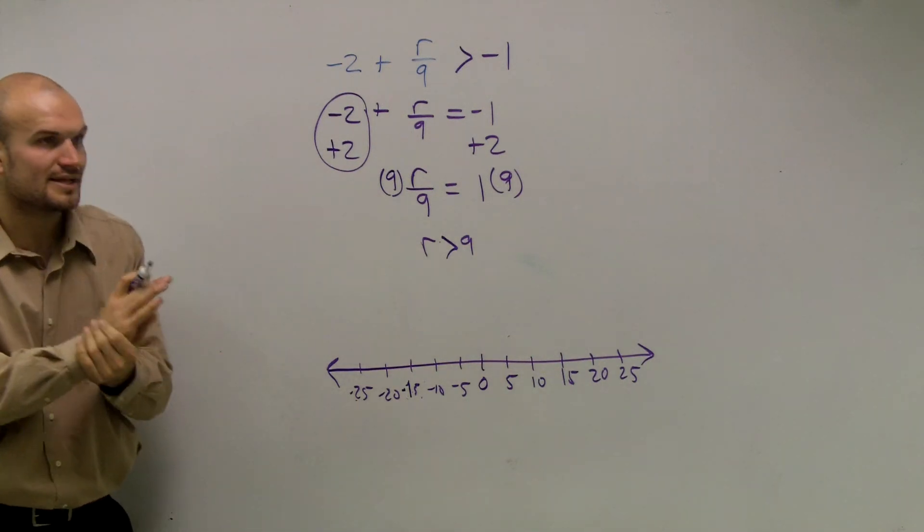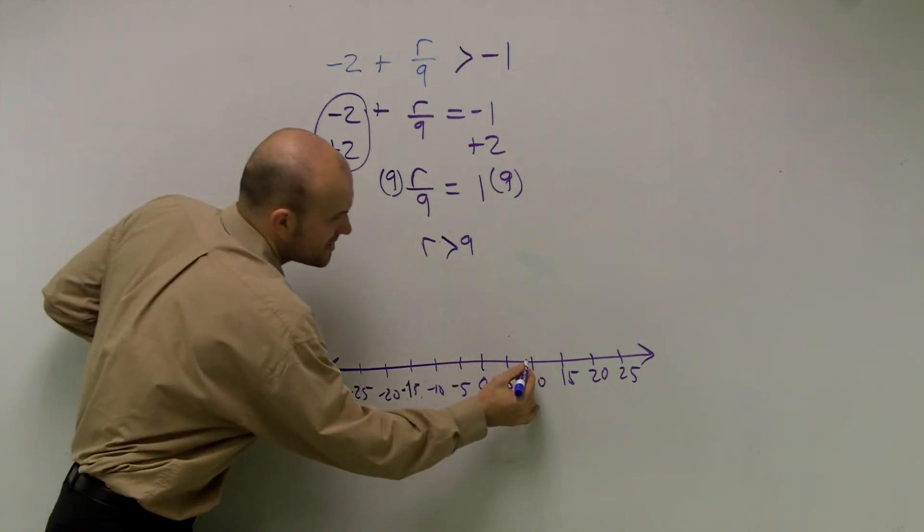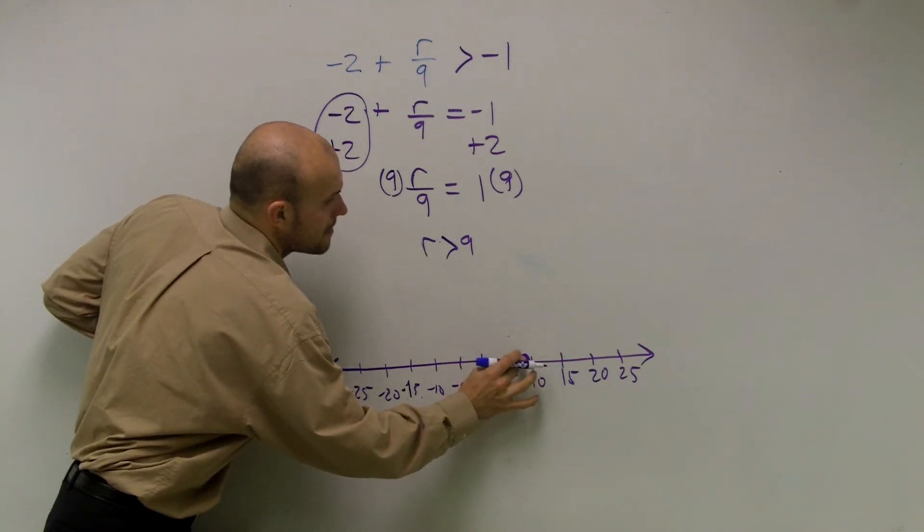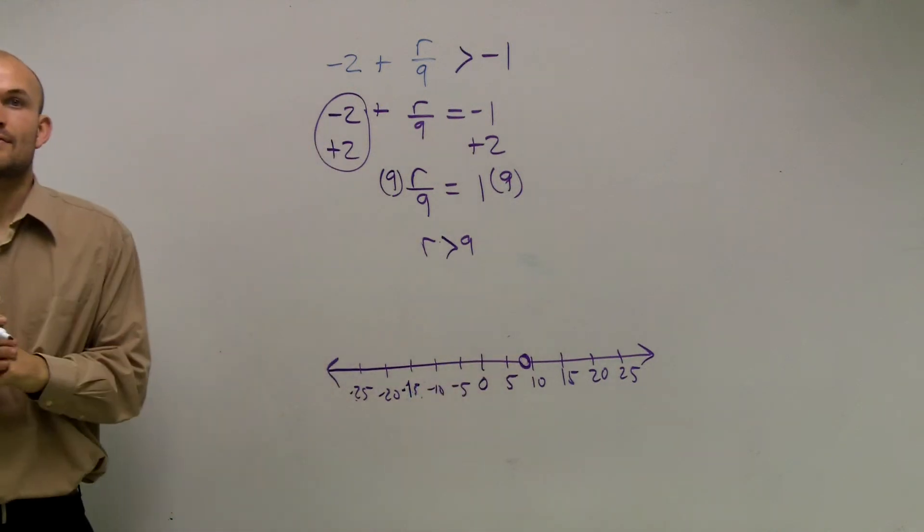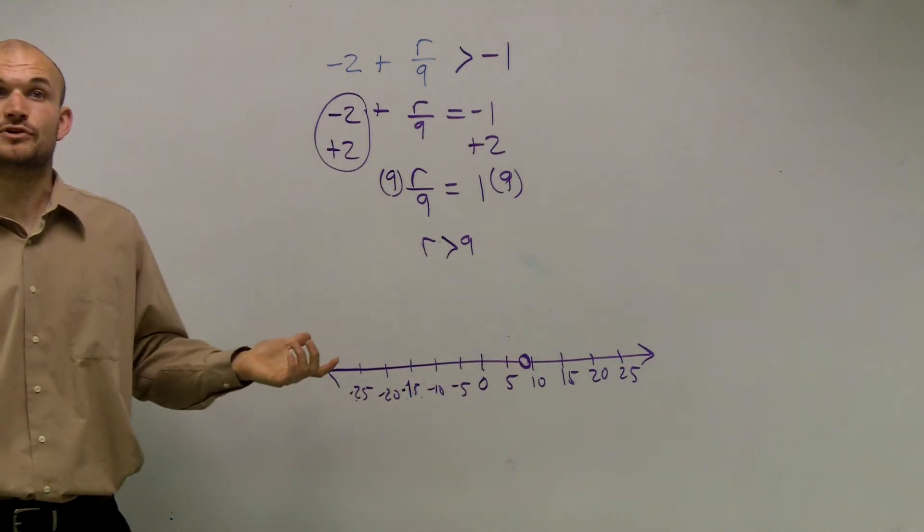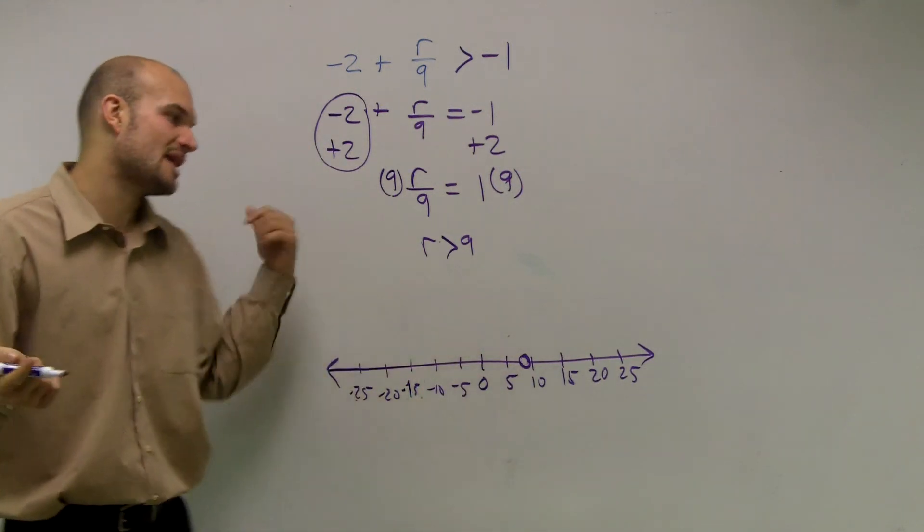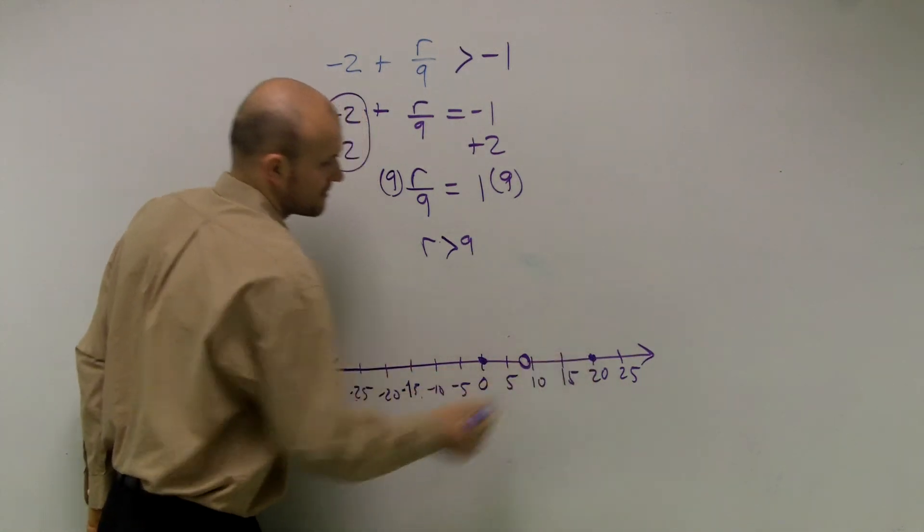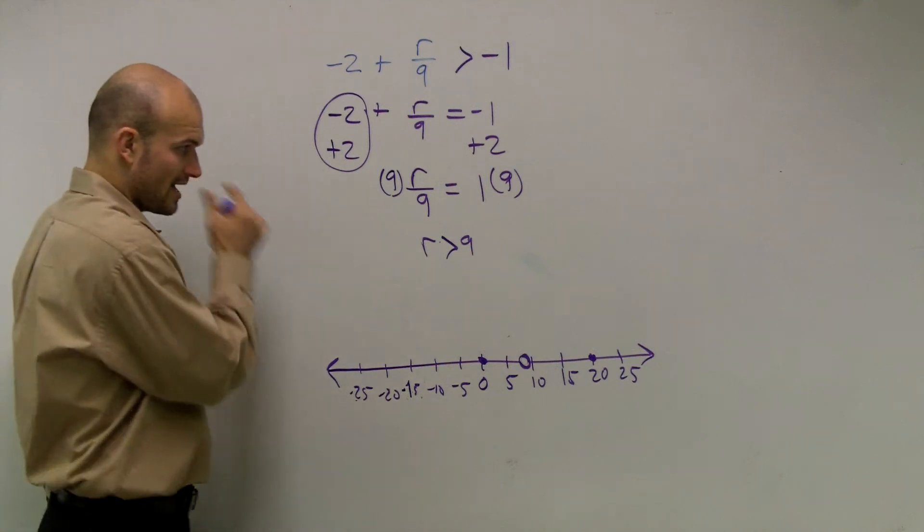All right, so now what I told you guys to do is to plot that point. So 9 is going to be like right here. And you want to leave it open. Then let's just pick a point. I don't know if it's true or not. Let's pick a point to the left and to the right. Let's pick 0, and let's pick 20.